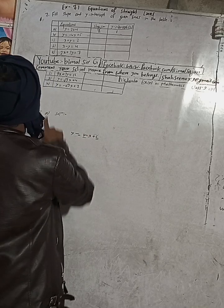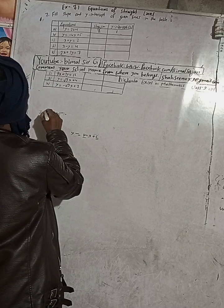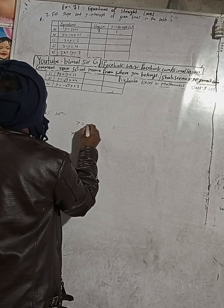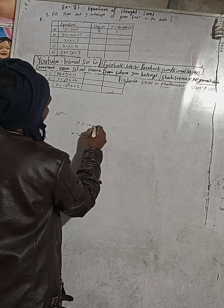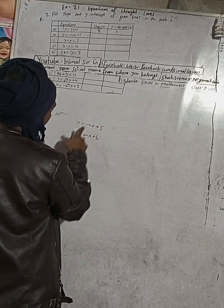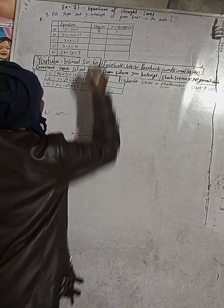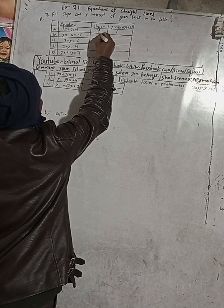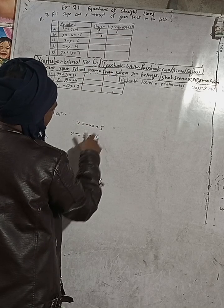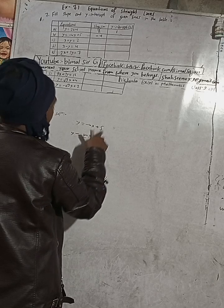Part (b): y = -4x + 5. When we equate this with y = mx + c, in place of m there is -4, so slope = -4, and in place of c there is 5, so y-intercept = 5.